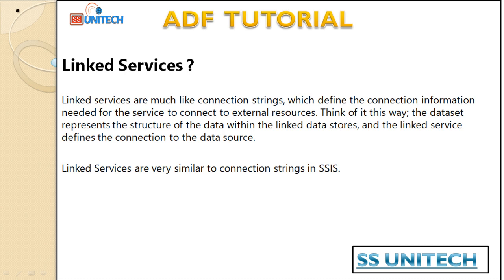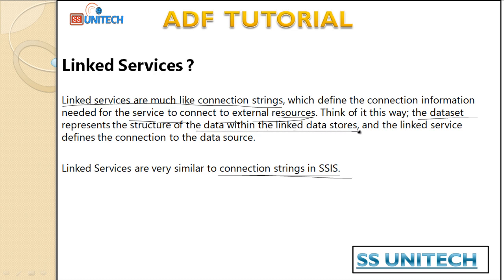Next are linked services. Linked services are very similar to connection strings inside SSIS. A connection string keeps information about your source and destination and how to connect with them — a linked service does the same thing. Linked services are very much like connection strings, which define the connection information needed for the service to connect to external resources, whether source or destination. To summarize: the dataset represents the structure of the data within the linked data store, and the linked service defines the connection to that data store. A linked service is needed to create the connection, just like a connection string, and then the dataset keeps the data with the help of the linked service.